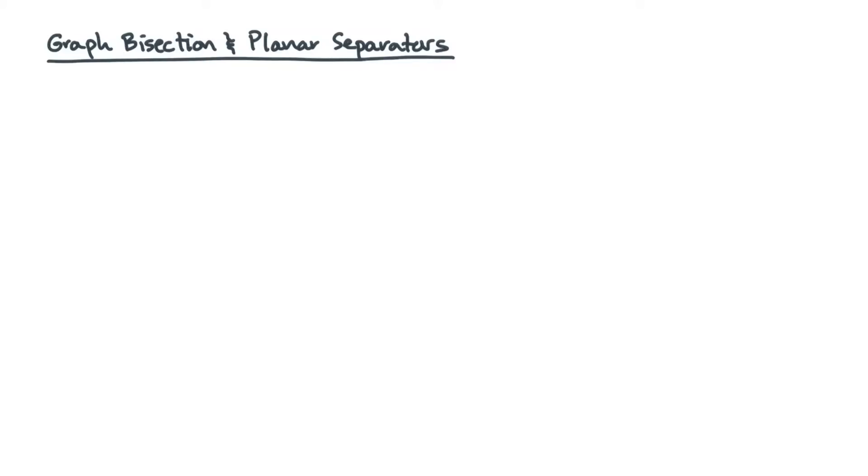As you might have guessed, graph partitioning is NP-complete. So your first intuition about graphs is that you need to look for good heuristics and try to exploit special structure wherever possible.